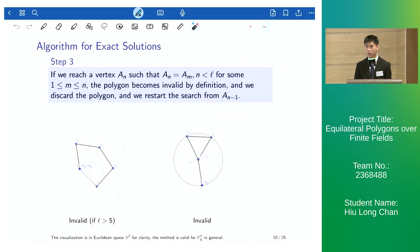If we reach a vertex A_n such that A_n equals to A_m, so the polygon has a repeated vertex, the polygon becomes invalid and so we discard the polygon.